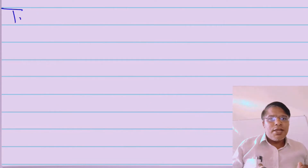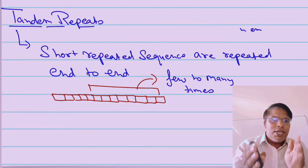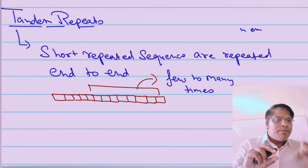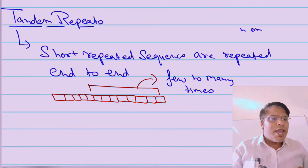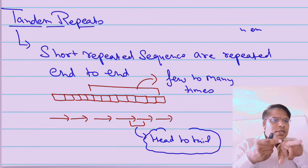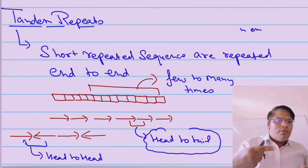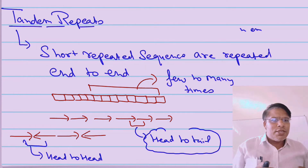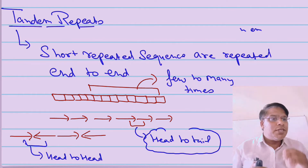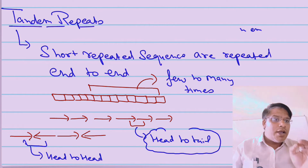In the case of tandem repeats, the repeat sequences are generally short, and these repeated sequences are present close to each other — just next to each other. Such repeats are known as tandem repeats. These repeats can be present in a head-to-tail orientation, or in a head-to-head orientation where one repeat is followed by another in reverse order.